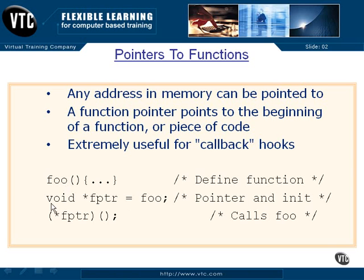Here we are now going to create something called a void pointer. It doesn't point to a character or an int or anything like that — it's undefined. It's defined as not pointing to any of those types because we're not going to increment it or do any math. This is the clean way to do it. In old C code, pre-ANSI standard, this would have been a char or character pointer. Now we call it a void pointer. So here's a void star f pointer.